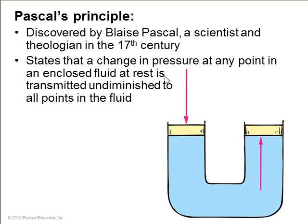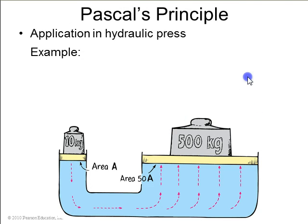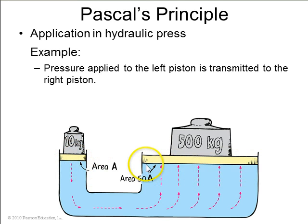Pascal's principle states that a change in pressure at any point in a fluid is transmitted to every other part of that fluid. So if you press downward on one column of water, that will press a force upward on another part of the column. In a hydraulic press, liquid in a pipe is connected to a larger area pipe with 50 times the area; the pressure is transmitted and remains the same, but since the area is 50 times greater, that same pressure will produce a force which is 50 times greater.